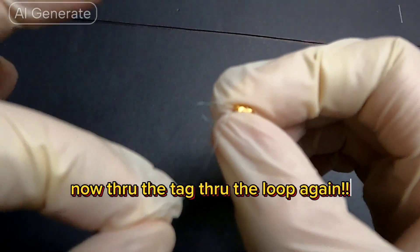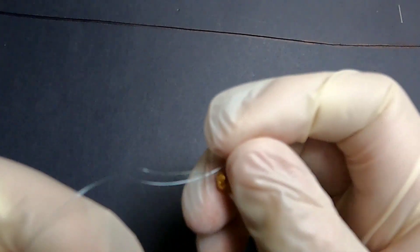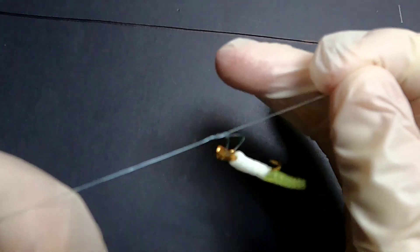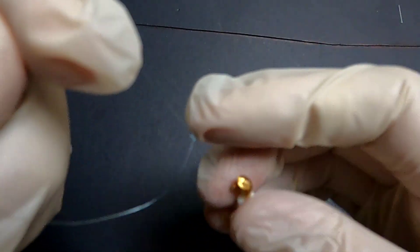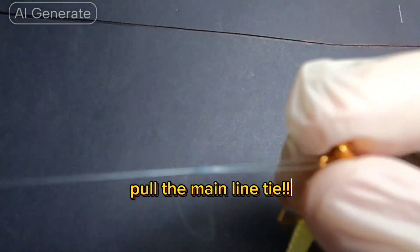Now through the tag, through the loop again. Pull the main line tight.